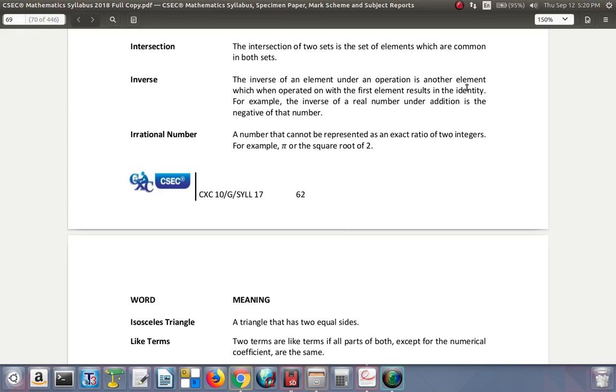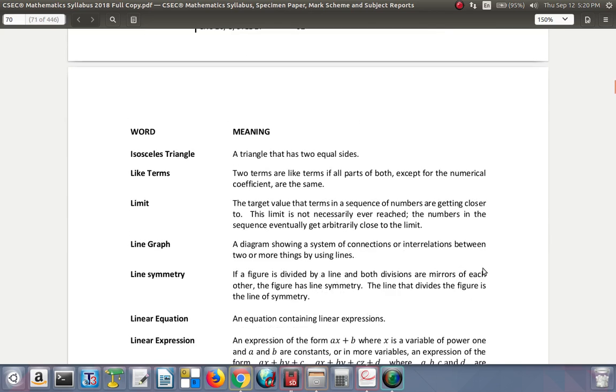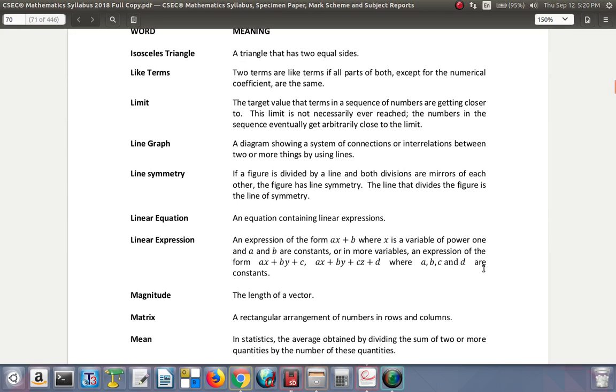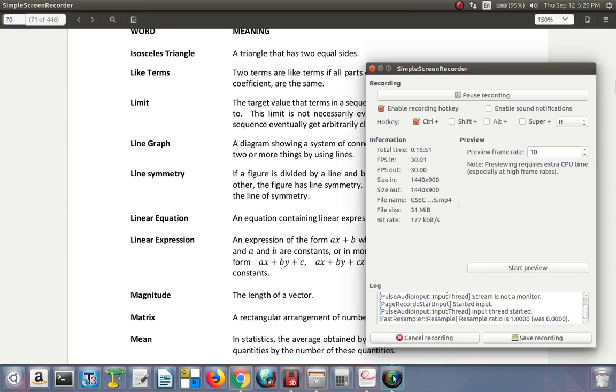Irrational number: a number that cannot be expressed as an exact ratio of 2 integers. For example, pi or the square root of 2. You cannot write it as a ratio, so it is an irrational number. We pause at this point and continue sometime later.